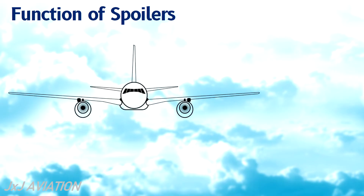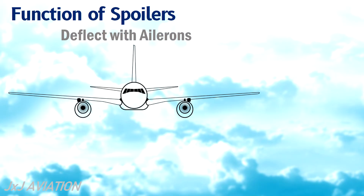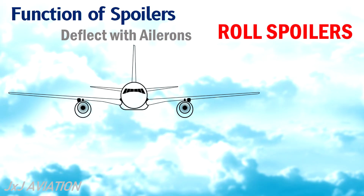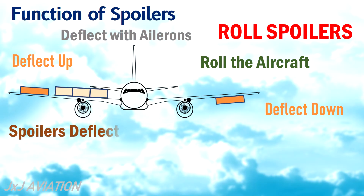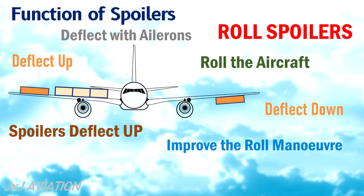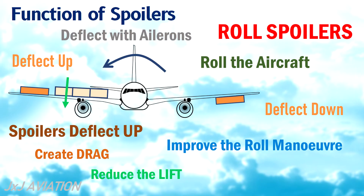A few spoiler surfaces may extend in flight and deflect along with the ailerons. The ailerons are used to roll the aircraft. To create the rolling moment, one of the ailerons deflects downward and the other aileron deflects upward. Along with the aileron which deflects upward, the roll spoilers will also deflect up. This is to improve the roll maneuver on the aircraft by creating drag and reducing the lift on that wing. The roll spoilers can also act as backup for the ailerons in case of failure.